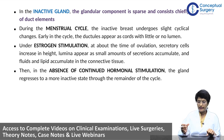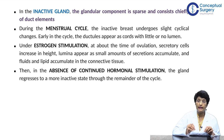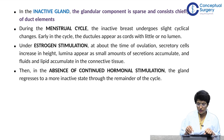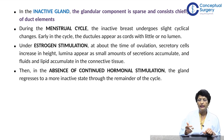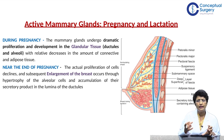During the menstrual cycle, there are changes in the ducts, but the duct is still solid — not hollow. With constant estrogen stimulation, lumina start appearing and some secretion starts accumulating, but in the absence of hormonal stimulation the gland can regress and become dormant. During pregnancy and lactation, a lot of proliferation and development occurs in the glandular tissue.